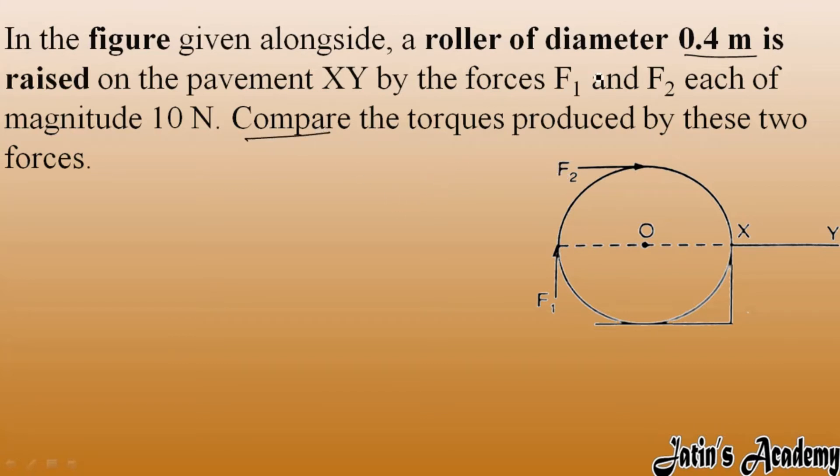Now, the diameter is given as 0.4. Before understanding all these things, we have to understand the pivot point here. Some people are confused that O is the pivot point, but actually in this case O is not the pivot point. In this case, X is the pivot point. Listen carefully.